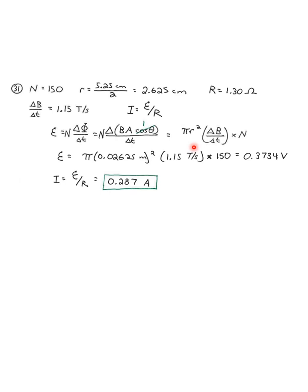But pi r squared times N times delta B over delta T, and that is the rate of change of the magnetic field. So, when we plug in all the values, we get an electromotive force of 0.3754 volts. Finally, we find the induced current by dividing that by the resistance, and we get 0.287 amperes.